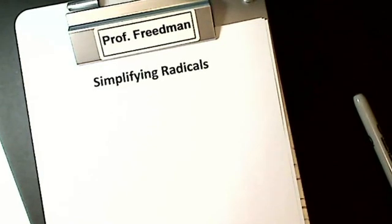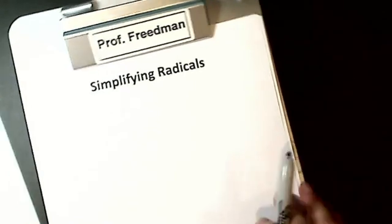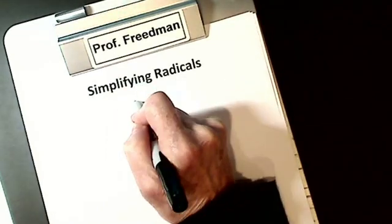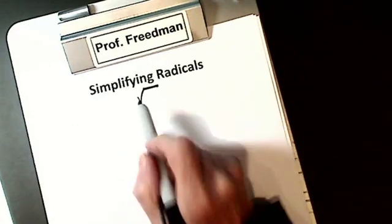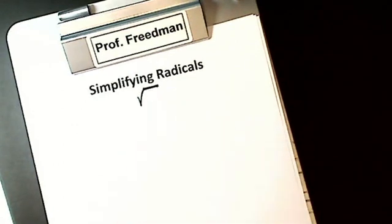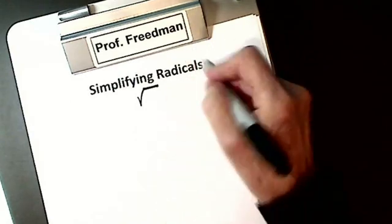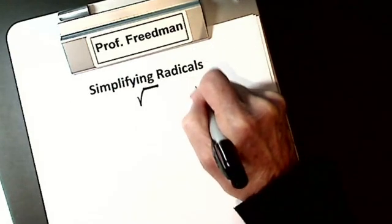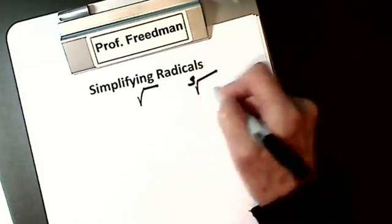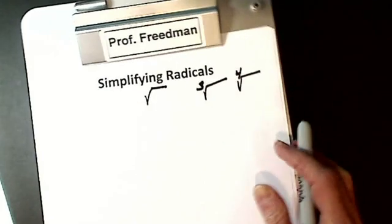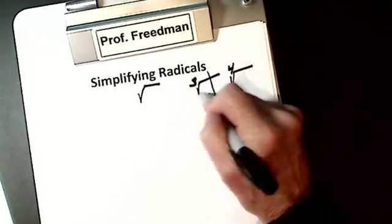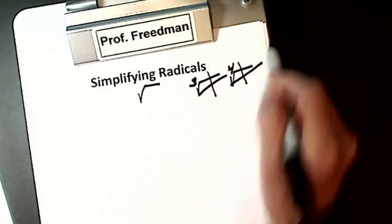Today we're going to simplify radicals. I think you're going to find this easy. Anything under this sign is a root or a radical. If there's no number here, a square root is understood. If later on we have a 3, I'd be taking cube root. I could possibly take a fourth root, but today we're just going to deal with square roots.